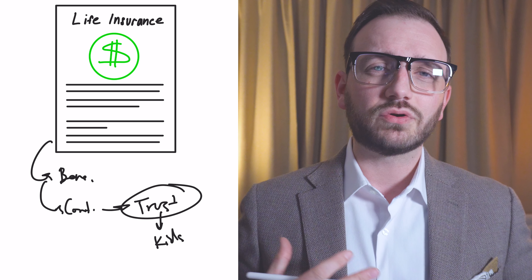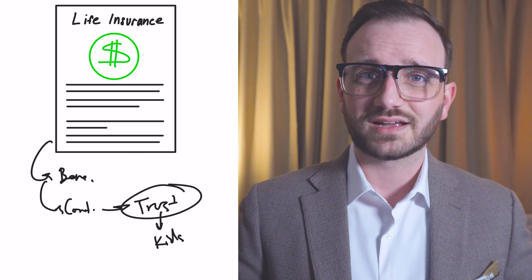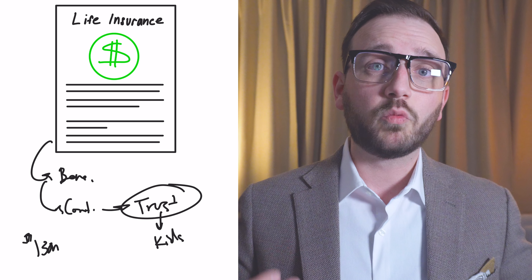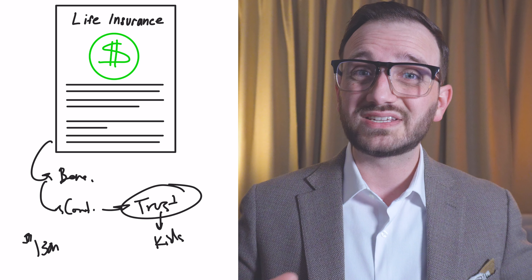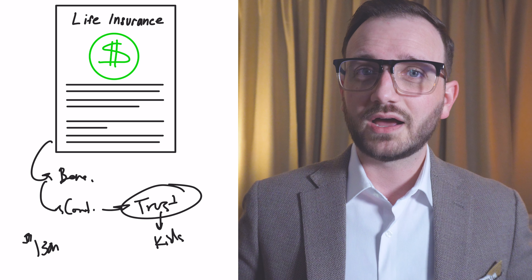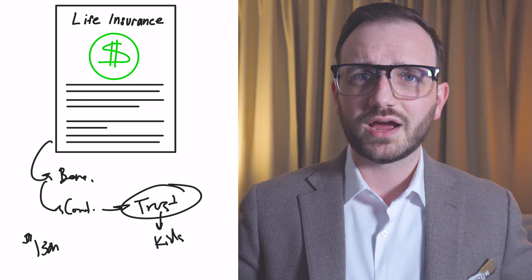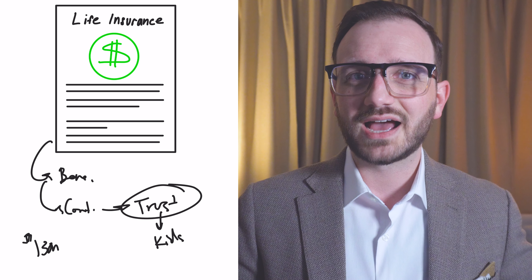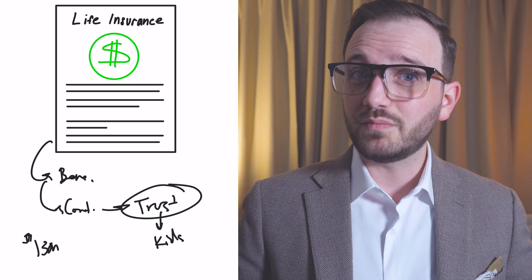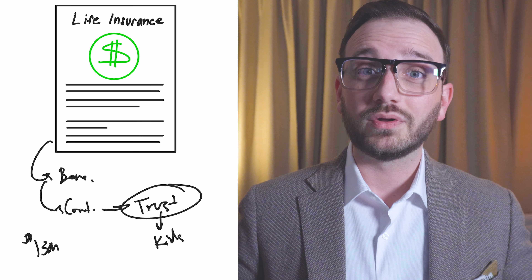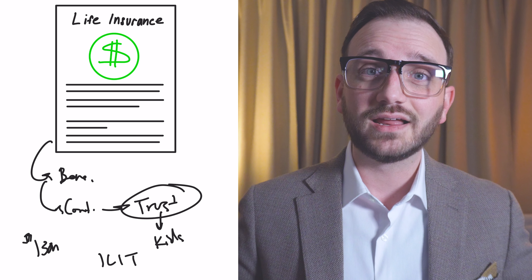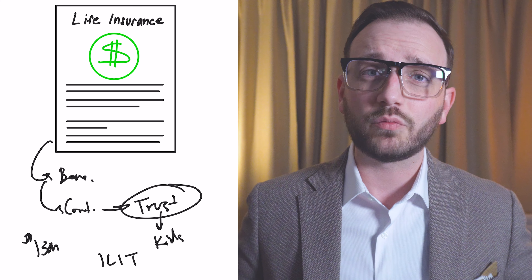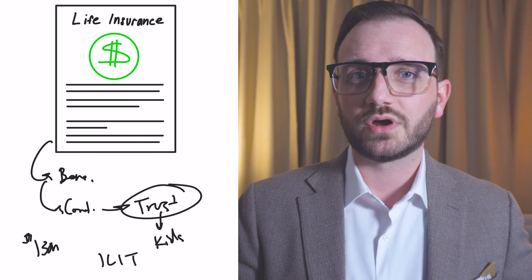There is one big exception: if your estate is large enough to potentially trigger estate taxes. Right now the limit is $13 million, which is not very many people, but it will go down in the future, and you need to know your own state laws regarding estate taxes. If you end up with a large retirement account, brokerage accounts, investment property, and a large life insurance policy on top, you could run into an estate tax issue. In this case, it may be appropriate to use an irrevocable life insurance trust, also known as an ILIT — a separate trust from your living trust that becomes its own entity, excluded from your estate.